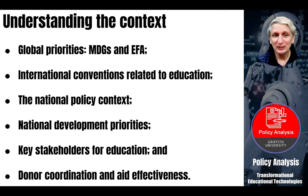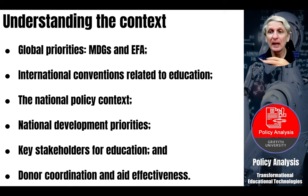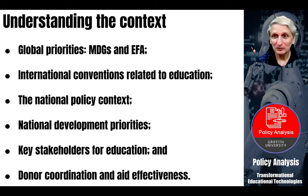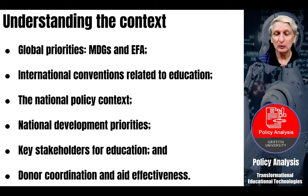There'll also be various national policies around education. Here in Australia, we've got a national curriculum and various other policies around literacy, numeracy and various other elements. Then there'll be national development priorities — in the Australian context, within our national curriculum, we have three main areas around sustainability, engagement with Asia, and Indigenous and Torres Strait Islander issues, which provide an overall priority focus across all learning areas. Then we have key stakeholders, which becomes a significant focus at whatever level. From an international perspective, donors and aid agencies are significant for many developing countries in addressing these major reforms and initiatives.